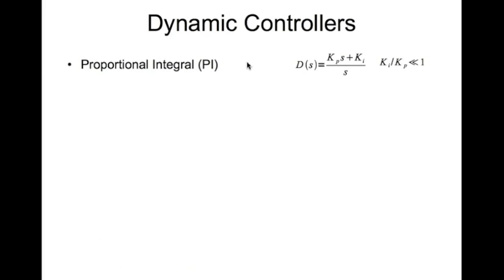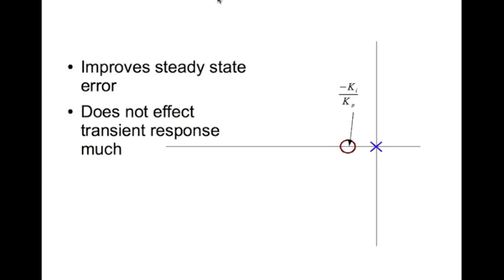The first dynamic controller we look at is the proportional-integral (PI) controller. The transfer function of the controller has an s factor in it: kp times (s + ki) divided by s. For a PI controller, ki divided by kp is very much less than one. The PI controller typically doesn't change the shape of the root locus. In the pole-zero map, you have the pole at zero and the zero very close to the pole at minus ki divided by kp.